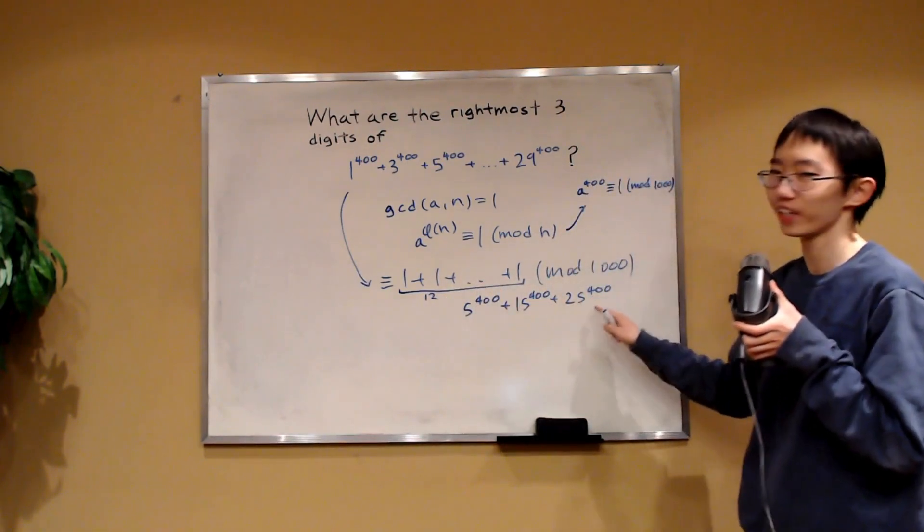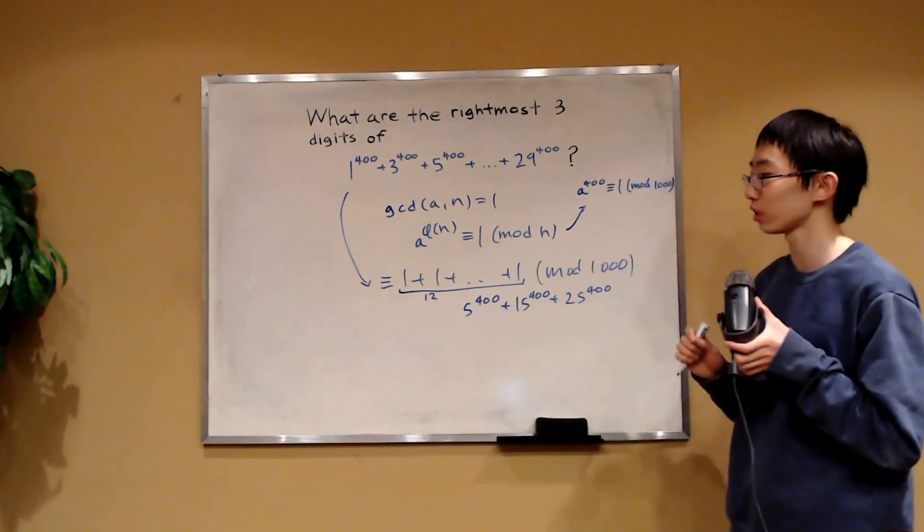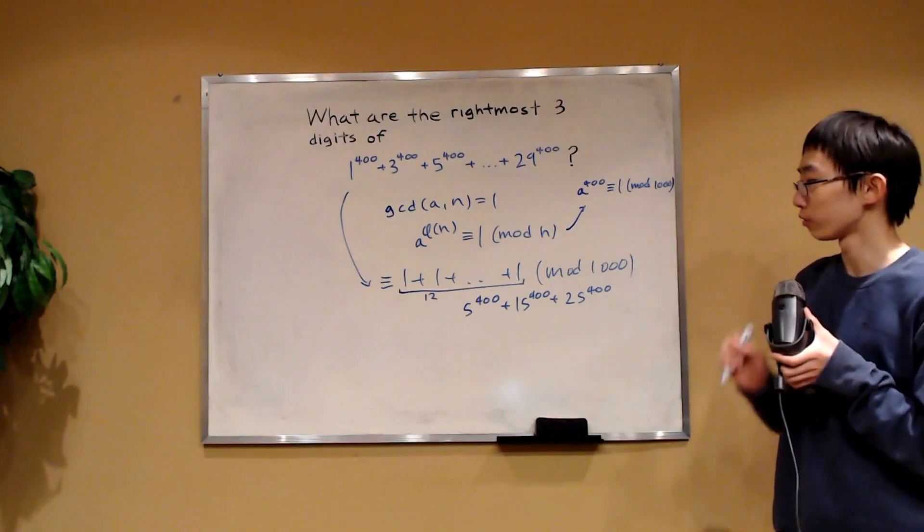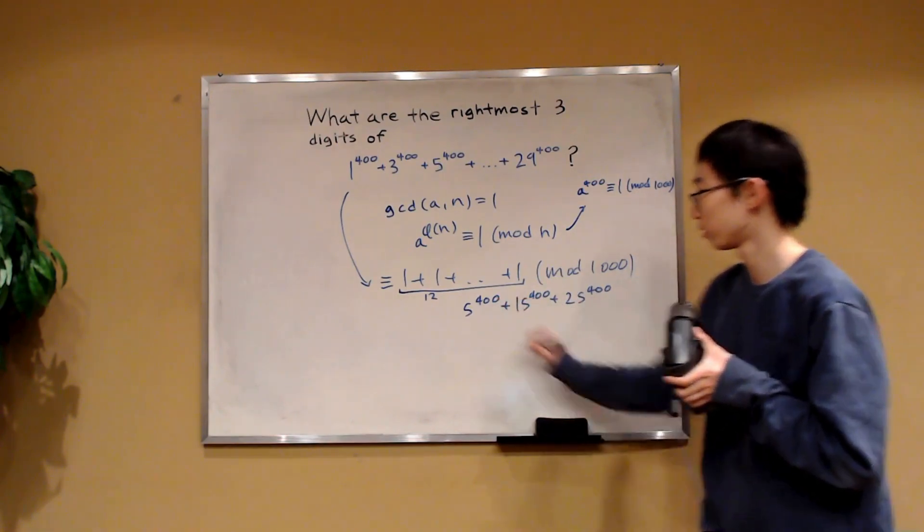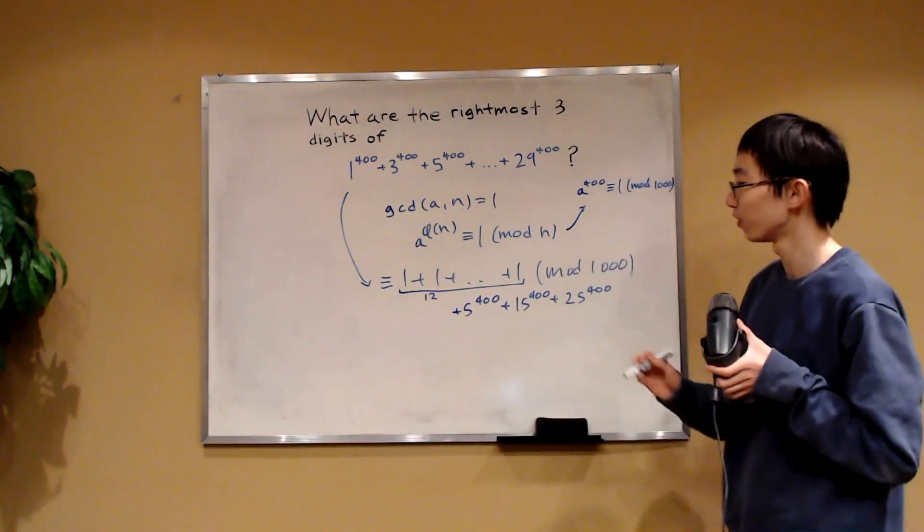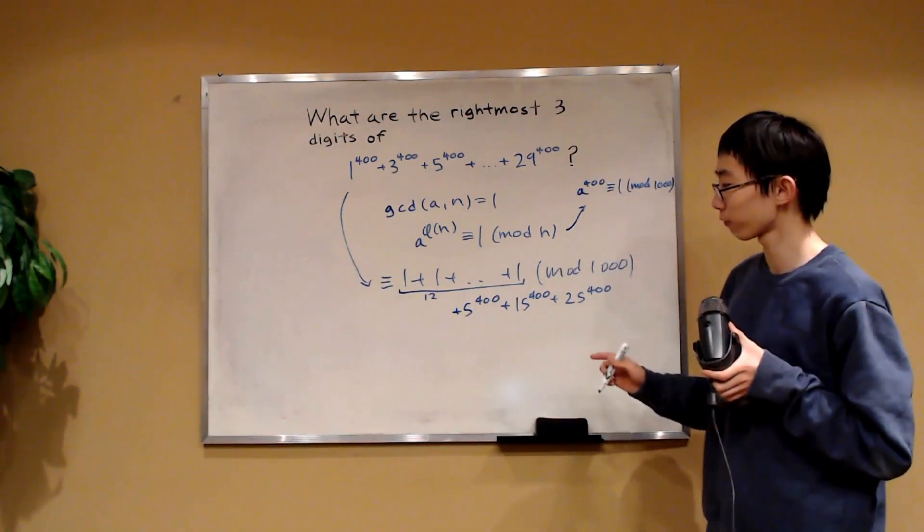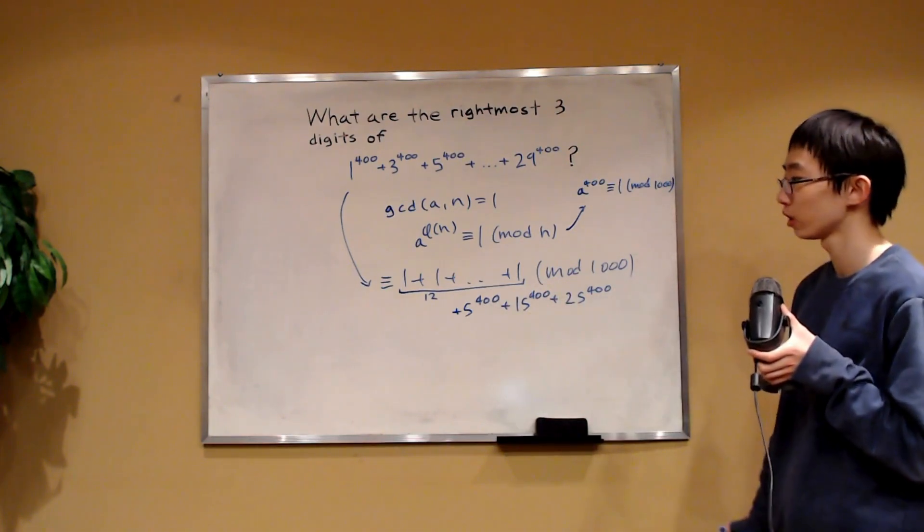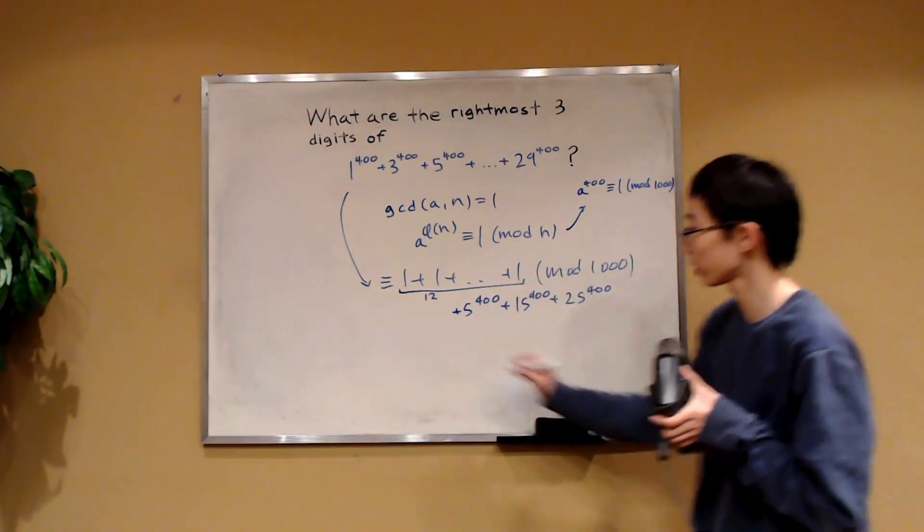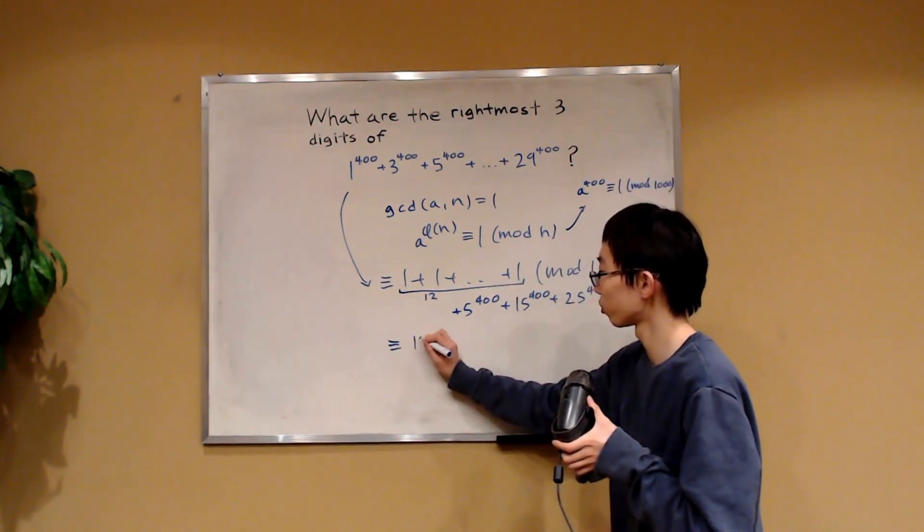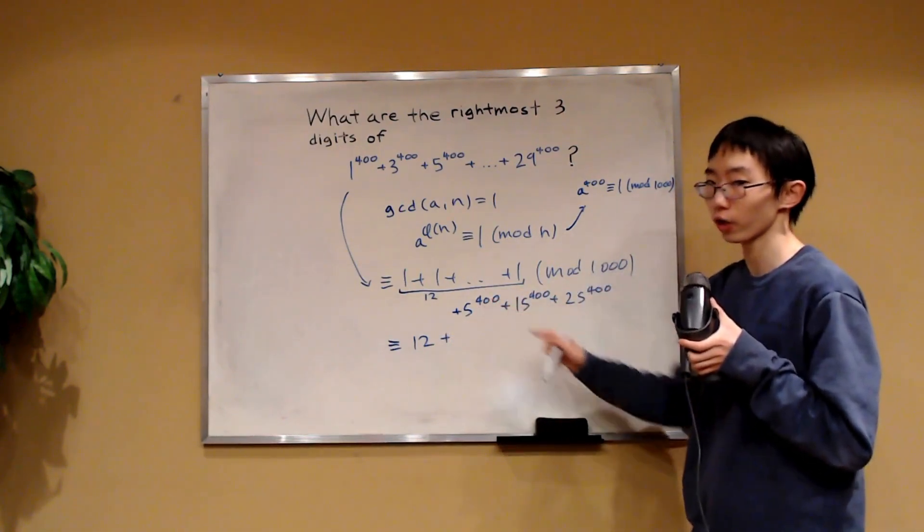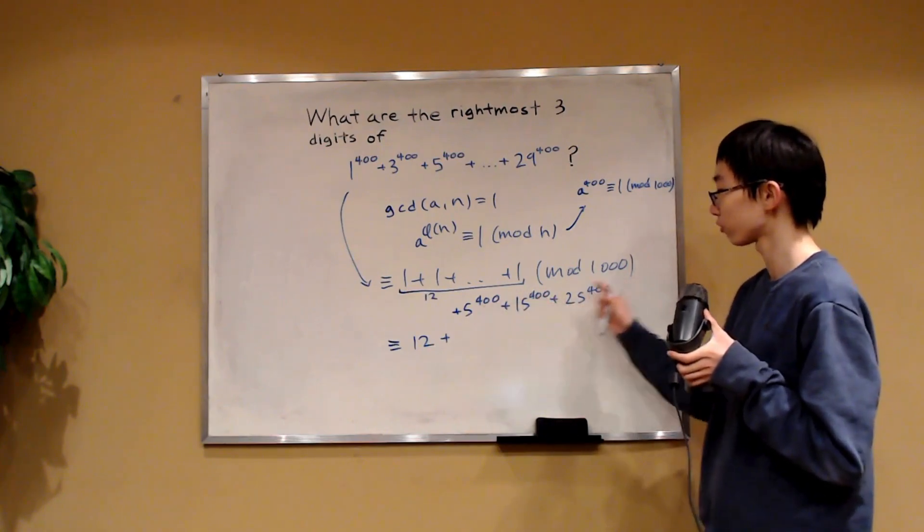Now, these numbers we are not sure. We cannot necessarily say that they are congruent to 1 mod 1,000. How can we deal with them? Well, I'm going to write a plus. We can deal with them by first noticing that they all have a factor of 5 to the 400. So this entire thing is congruent to 12 and then plus they all have a factor of 5 to the 400 so we can take them out of all of these terms.